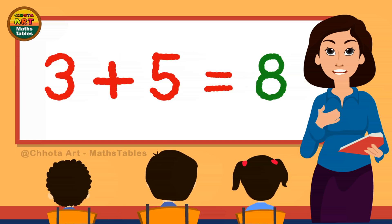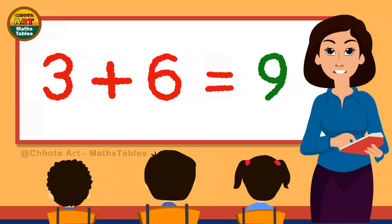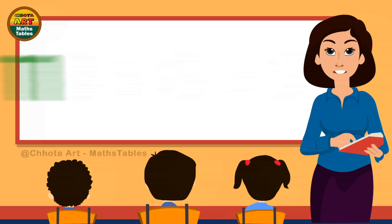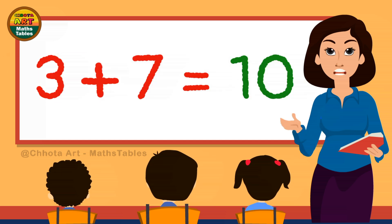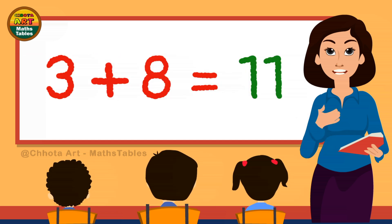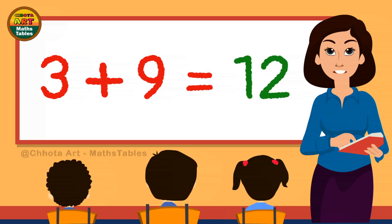3 plus 5 is 8. 3 plus 5 is 8. 3 plus 6 is 9. 3 plus 6 is 9. 3 plus 7 is 10. 3 plus 7 is 10. 3 plus 8 is 11. 3 plus 8 is 11. 3 plus 9 is 12.